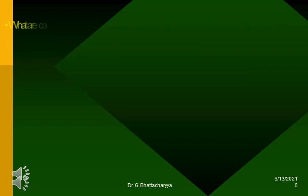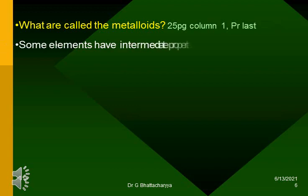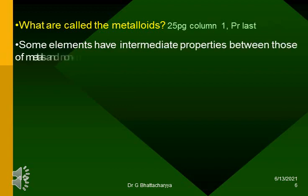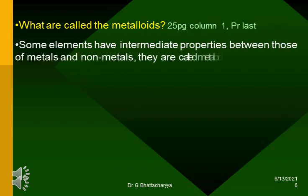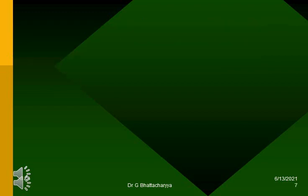What are called metalloids? Some elements have intermediate properties between those of metals and non-metals. They are called metalloids. Examples are boron, silicon, germanium, etc. What are called compounds?